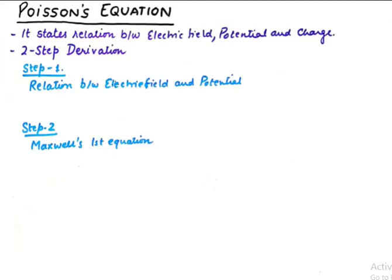In step number 1, we need to establish the relation between electric field and potential, where electric field is our electric field intensity E vector and electric potential is voltage. From the basic definition of voltage, we know that the gradient of voltage, the negative gradient of the voltage, results in electric field intensity.